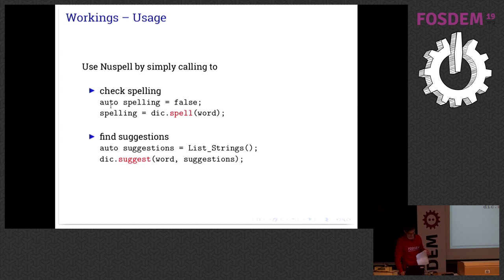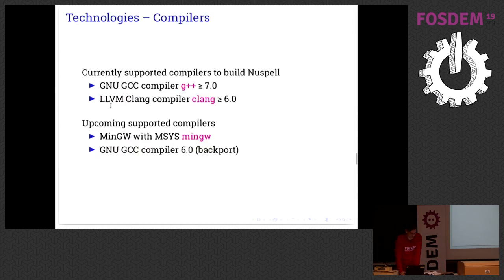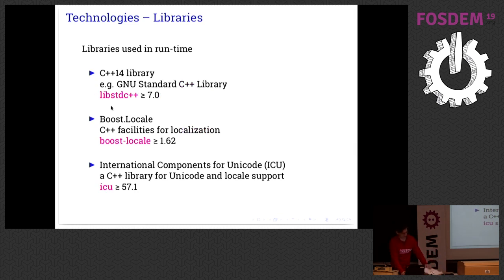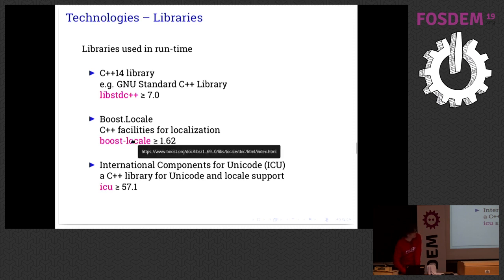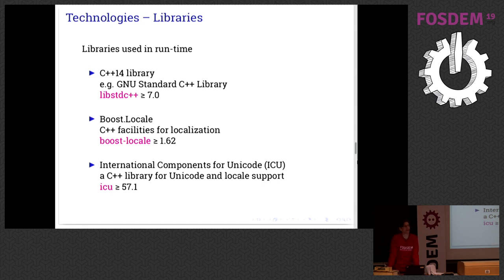Currently we support the GCC and Clang compilers, and we're also going to support MinGW and do some backporting to older C++ compilers. The dependencies these compilation projects need are very minimal — we use only three, and eventually we might even drop Boost.Locale to have a really minimal amount of dependencies. This is already much less than other spell checkers are using, which makes it very portable.